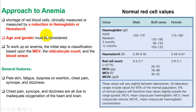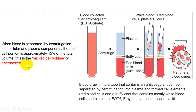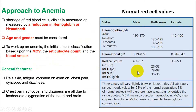Anemia is a shortage of red blood cells, but how do we clinically measure it? Clinically, we measure it by a reduction in hemoglobin or hematocrit. When you see lab values, look at either hemoglobin or hematocrit. Remember: hematocrit — or packed cell volume — is the part of blood that is red blood cells. The normal hematocrit is 40 to 45 percent, which can be expressed as 0.39 or 39 percent. This corresponds to hemoglobin values as well.